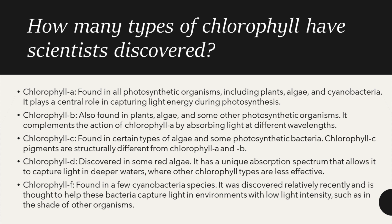Chlorophyll B is also found in algae and some other photosynthetic organisms. It complements the action of chlorophyll A by absorbing light at different wavelengths. Chlorophyll C is found in certain types of algae and some photosynthetic bacteria, and its pigments are structurally different from chlorophyll A and B.